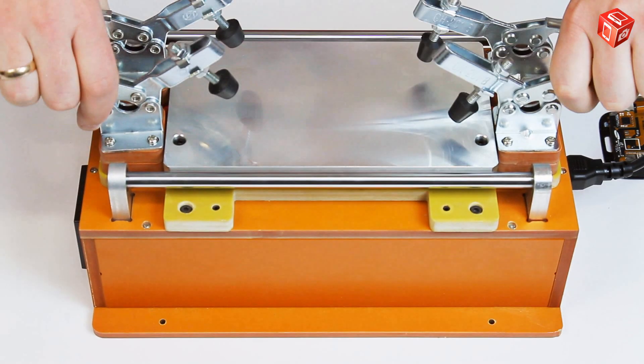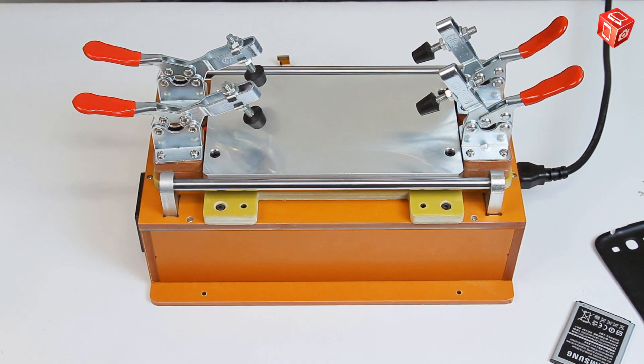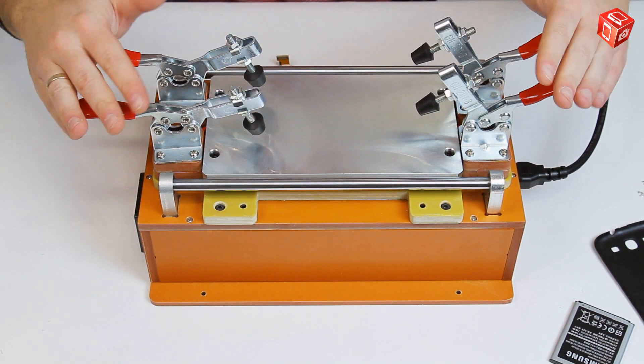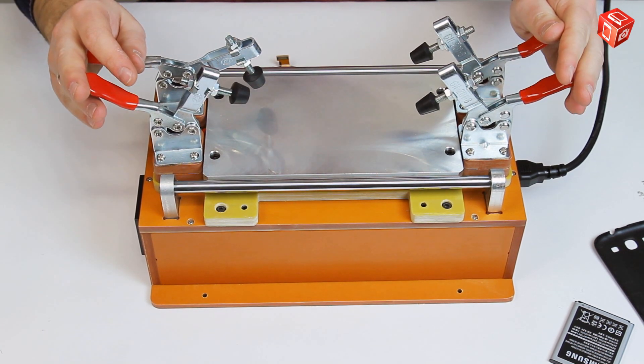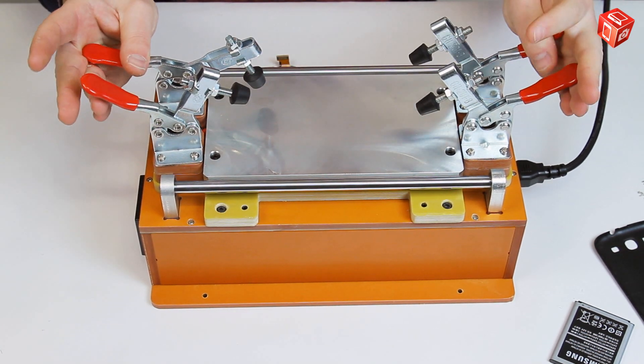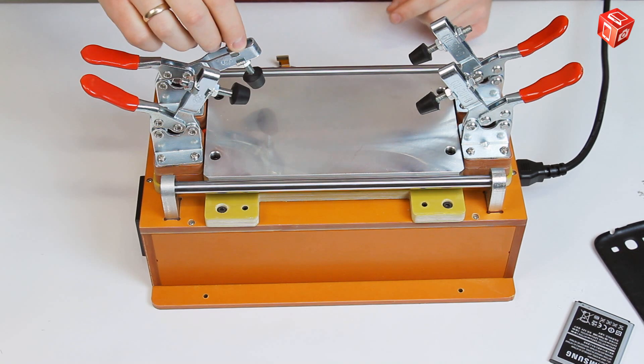Take the touchscreen glass separator machine, place the display module with the glass down on the heating surface. Set the required length of the separator holders so that they press the display tightly to the heating surface.